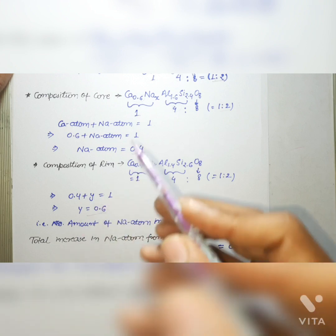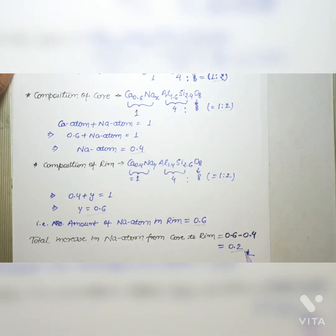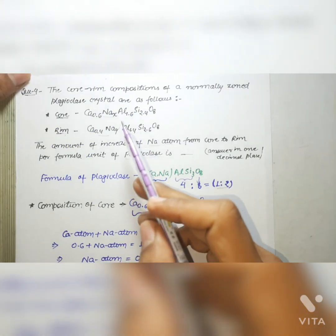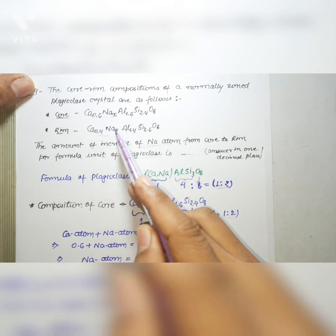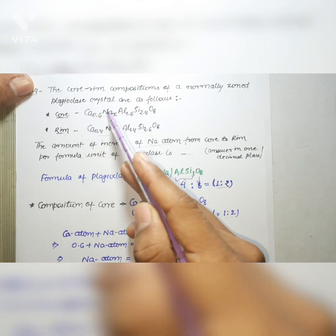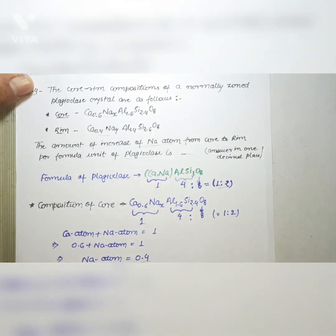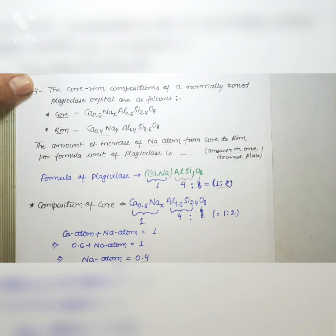In the core there are 0.4 sodium atoms, and in the rim there are 0.6 sodium atoms. So the amount of increase of sodium from core to rim is 0.6 − 0.4 = 0.2. A quicker way to see this: Ca decreases from 0.6 to 0.4, a drop of 0.2, so Na must increase by 0.2. The answer, in one decimal place, is 0.2.